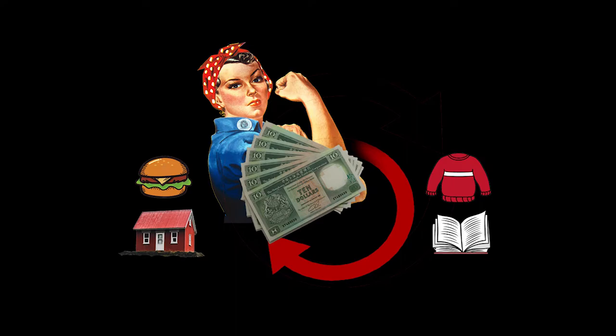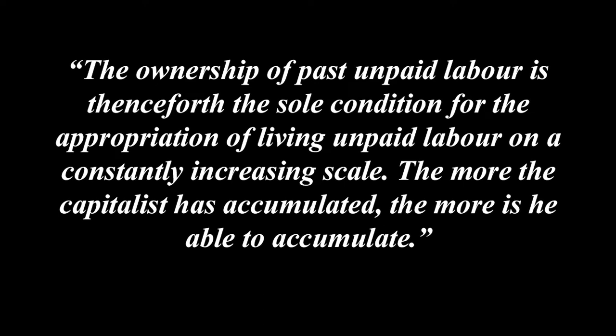While this is something we'll deal with more over the next few chapters, we can see that from what we know so far, capitalism has already solved this problem. We already know that the value of the wages that the workers receive, representative of the value of their labour power, is determined not only to maintain their labour power, but also to reproduce its numbers. The ownership of past unpaid labour is thenceforth the sole condition for the appropriation of living unpaid labour on a constantly increasing scale. The more the capitalist has accumulated, the more he is able to accumulate.